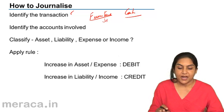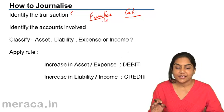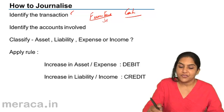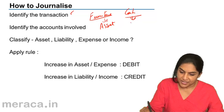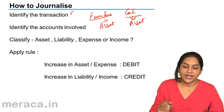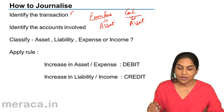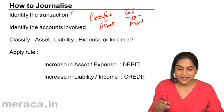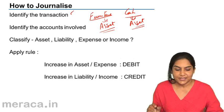Next, classify. For each account, decide: is it an asset, a liability, an expense, or an income? What is furniture? It is an asset. What is cash? It is an asset. So we have identified the transaction, identified the accounts involved, and then classified them. In this case, we have two assets.